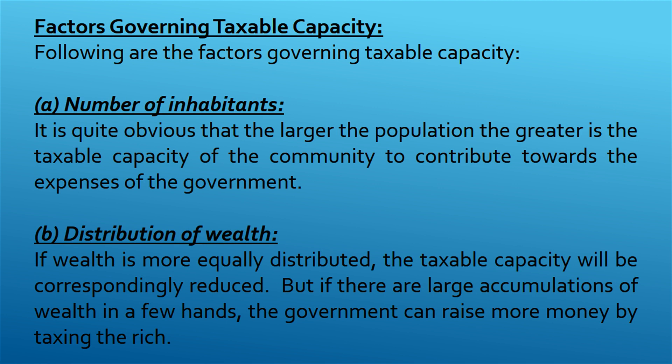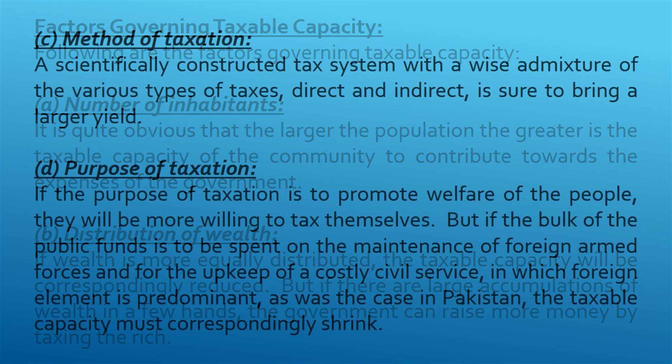Factors governing taxable capacity: a. Number of inhabitants — the larger the population, the greater is the taxable capacity of the community to contribute towards the expenses of government. b. Distribution of wealth — if wealth is more equally distributed, the taxable capacity will be correspondingly reduced. But if there are large accumulations of wealth in a few hands, the government can raise more money by taxing the rich.